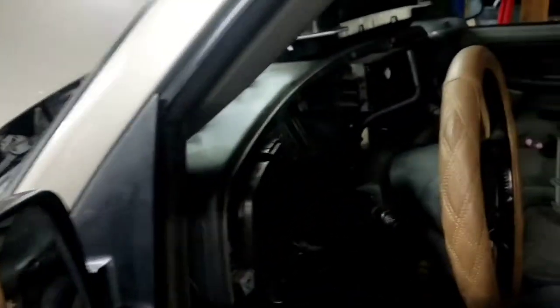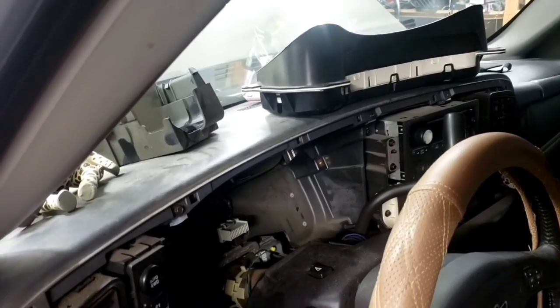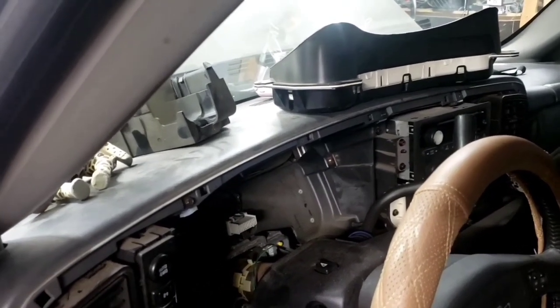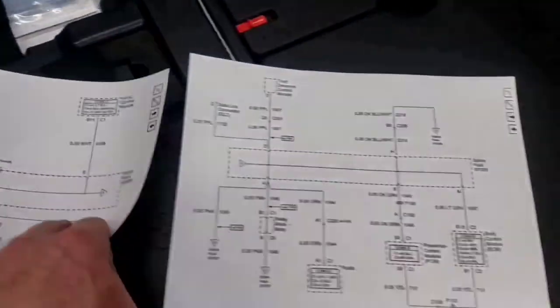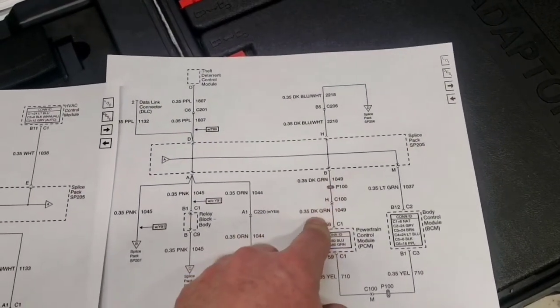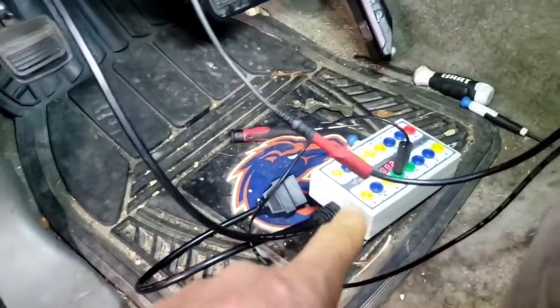What you would do is get a new one, buy it, put it in, program it, and the parasitic draw is gone. But we want to take it a step further and continue to troubleshoot. With the battery hooked back up and the fuse in, on splice pack 205 pin B - which is a dark green wire for the PCM - I have this probed into pin B and I'm going to my oscilloscope positive lead there. For the negative lead I'm using my breakout box because pins 4 and 5 are the ground on the DLC.